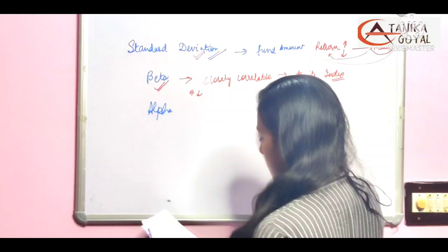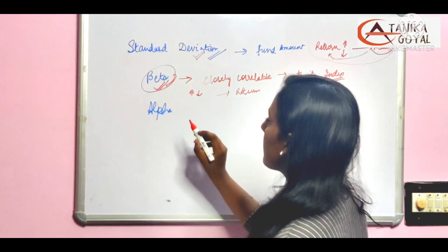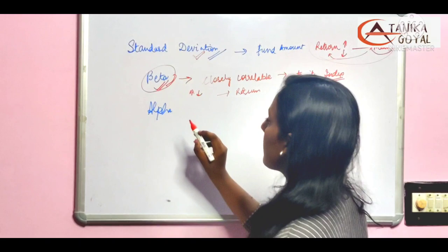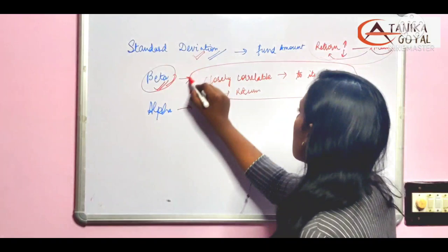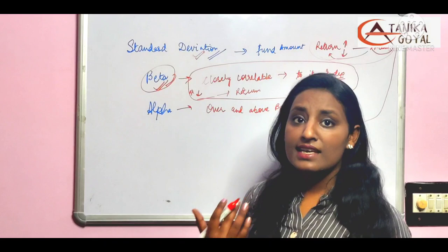Third is alpha. Alpha means that whatever amount beta has predicted, over and above that is alpha.